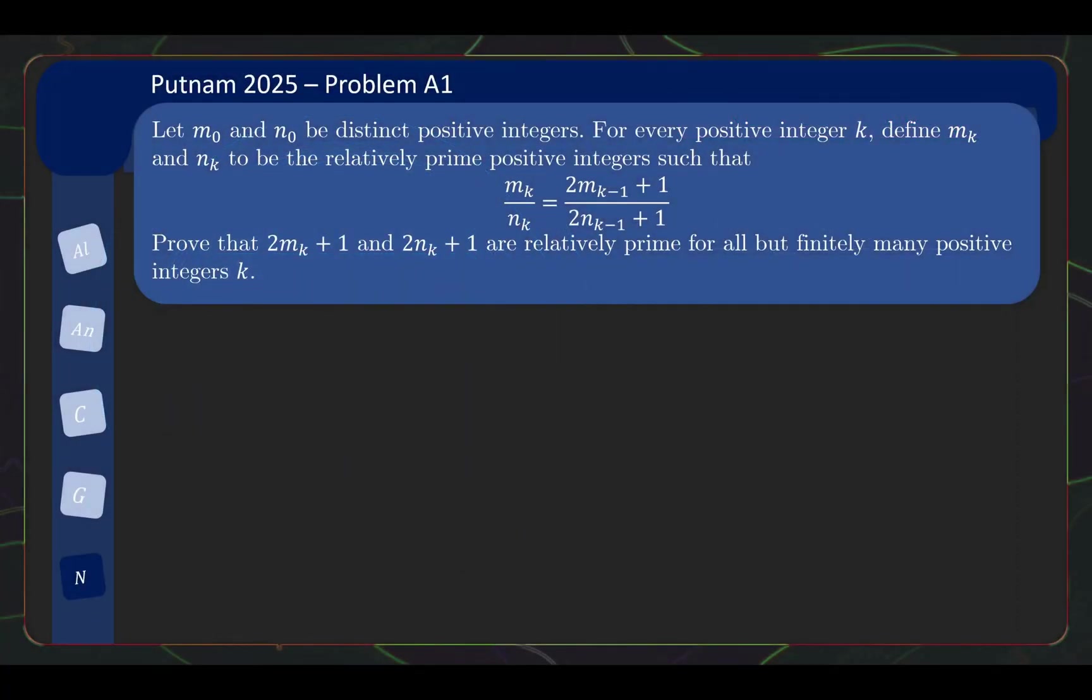So for problem A1, we have a number theory problem as follows. Let m₀ and n₀ be distinct positive integers. For every positive integer k, define mₖ and nₖ to be the relatively prime positive integers such that mₖ/nₖ = (2mₖ₋₁ + 1)/(2nₖ₋₁ + 1). So basically from the previous mₖ₋₁ and nₖ₋₁, you form this fraction, and then you reduce it to the lowest term to get mₖ and nₖ.